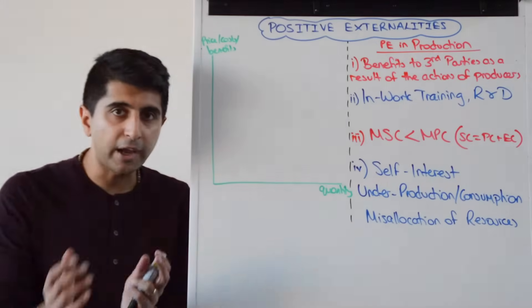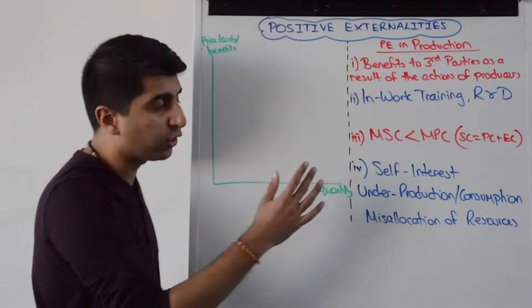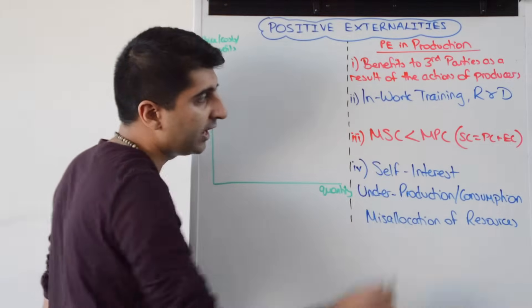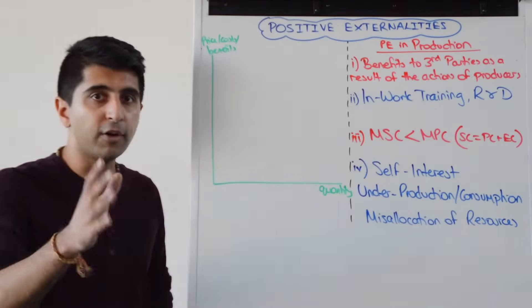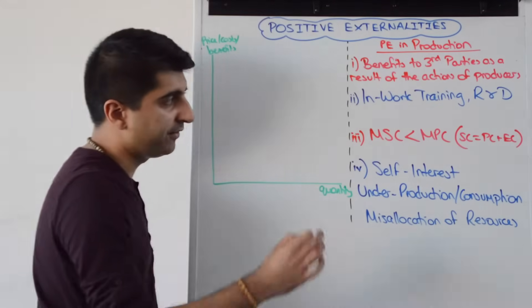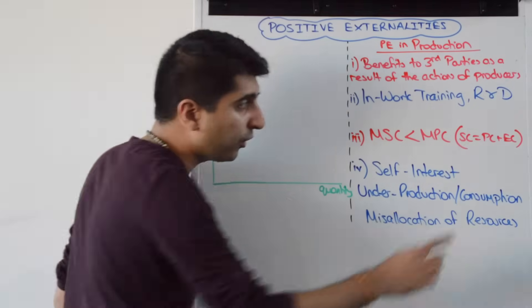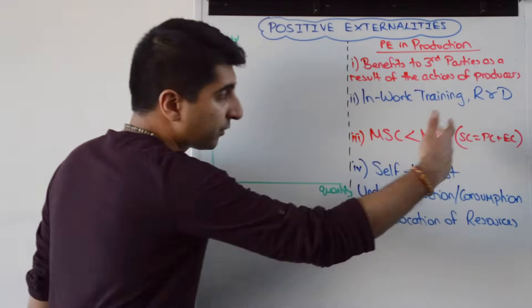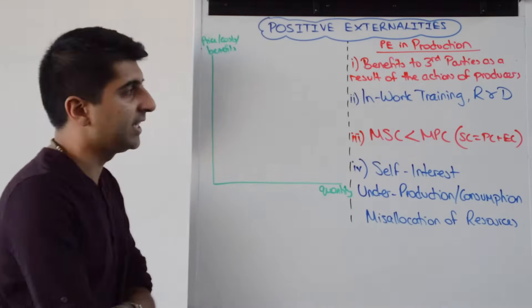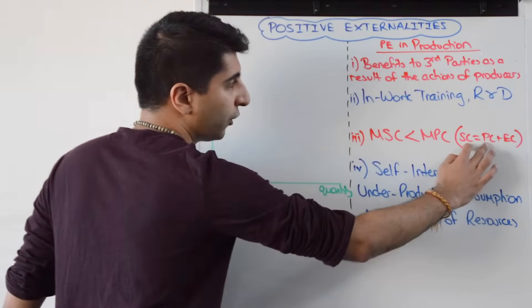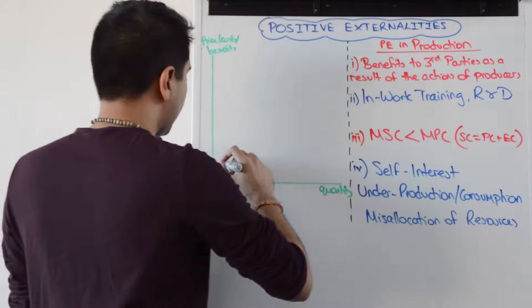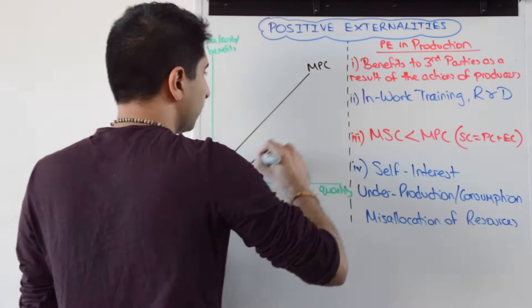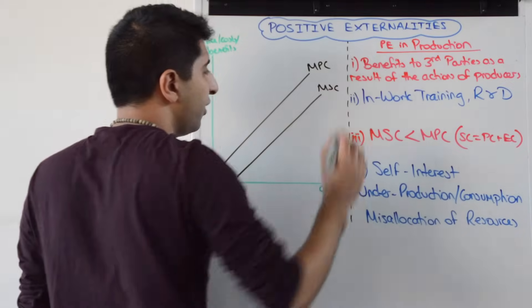What does that mean diagrammatically? Well, the impact is in production, so it's the cost curves that are going to differ. In this case, the marginal social cost is lower than the marginal private cost. Remember your equation for social cost — the external costs are actually going to be negative, so lower costs as a result of third parties benefiting here. That's going to pull down social cost in relation to private cost. So on a diagram, our marginal private cost is going to be over there, but marginal social cost is going to be below it.